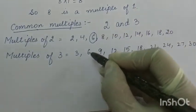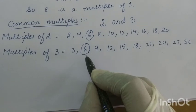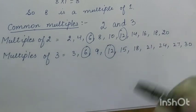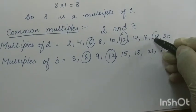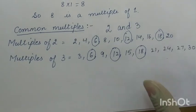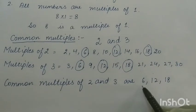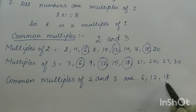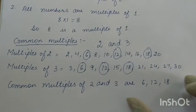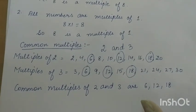See, 6 is in both 2 and 3, so it is a common multiple of 2 and 3. Now 12 is also common in both 2 and 3. And then 18 is also in both 2 and 3. So the common multiples of 2 and 3 are 6, 12, and 18. These are the first 3 common multiples of 2 and 3. This is how you find the common multiples of given numbers.